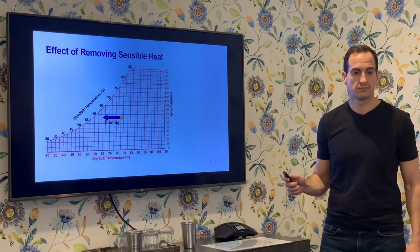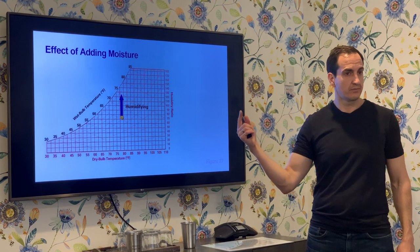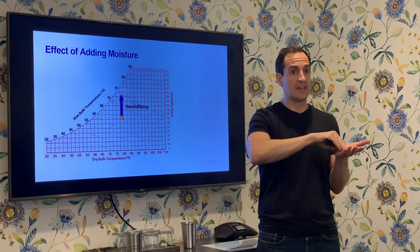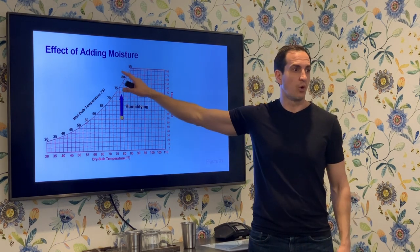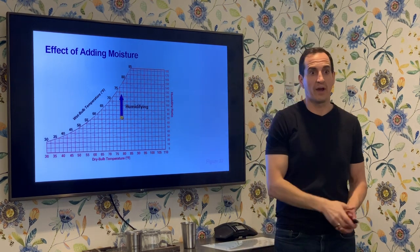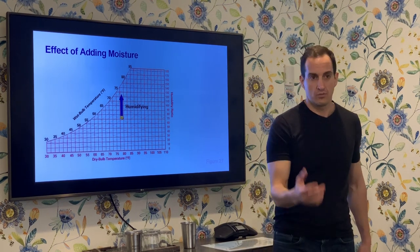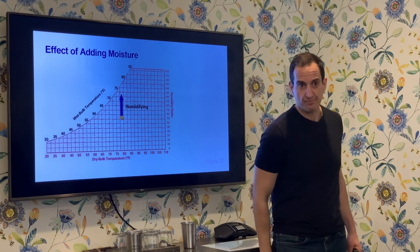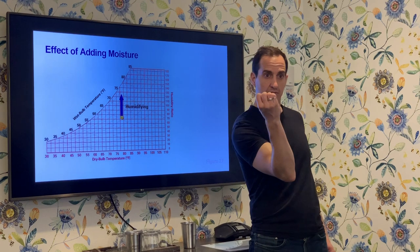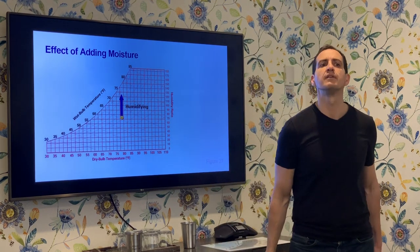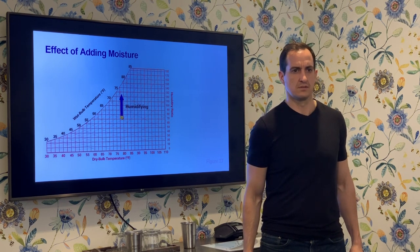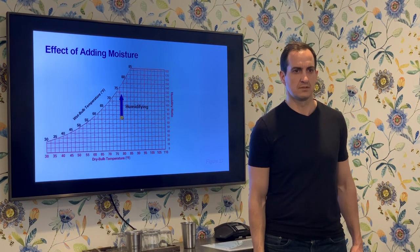I can add moisture directly to a space, but it's actually harder than you might think. Going from the current room temperature and humidity straight up on the chart toward the intersection of dry bulb, dew point, and wet bulb is quite hard to achieve. As I add moisture into the air, it gets colder — why? Because of evaporative cooling: a droplet of water as it evaporates absorbs sensible energy from the space, and those water molecules shed off the droplet until it is fully evaporated into the air.